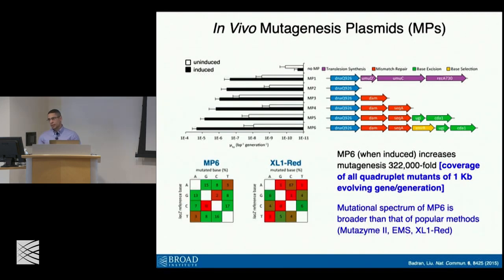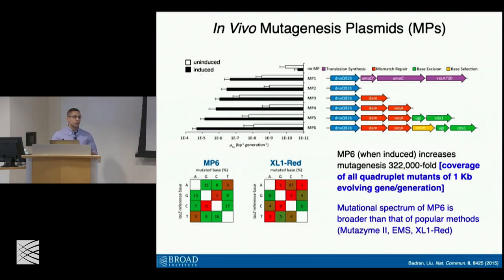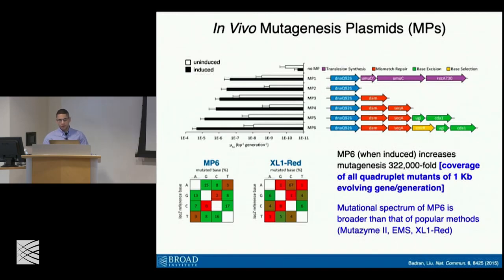So an important consideration is to ensure not only that you have high and robust mutagenesis, but also that the mutagenesis is quite diverse. MP6 shows a relatively useful mutagenesis spectrum. This is for a given gene of interest — in this case LacZ — where we've mutagenized it with MP6. This is the starting base and the mutated base, and you can see that we have access to the vast majority of these mutations, and the spectrum is quite even.